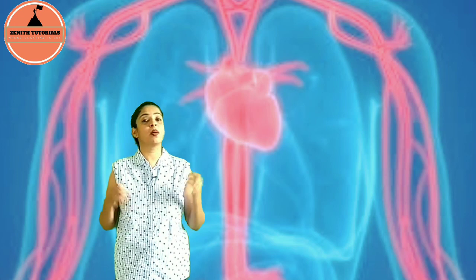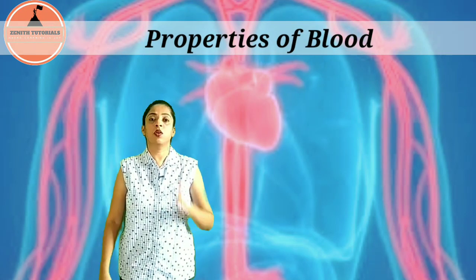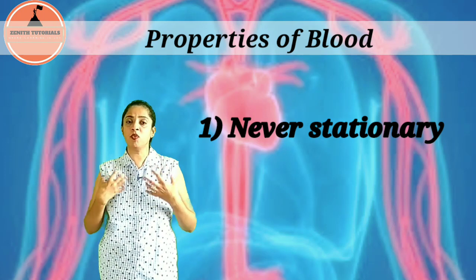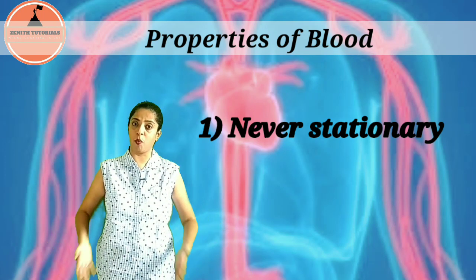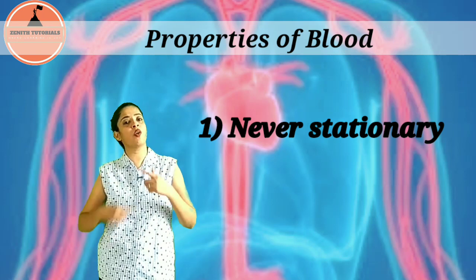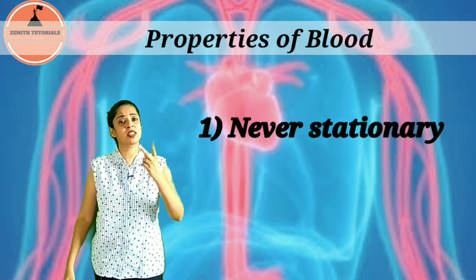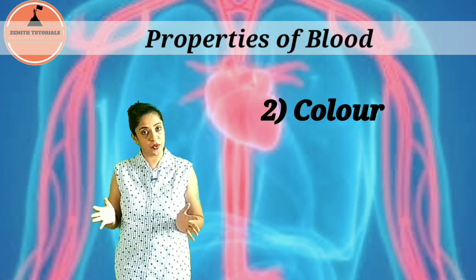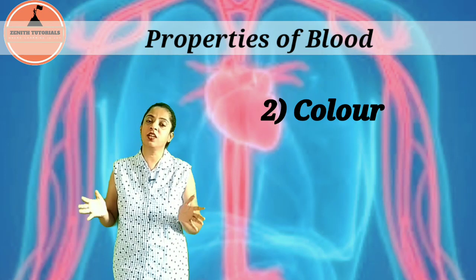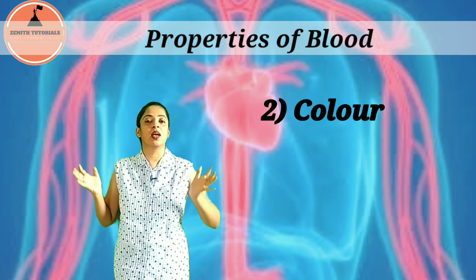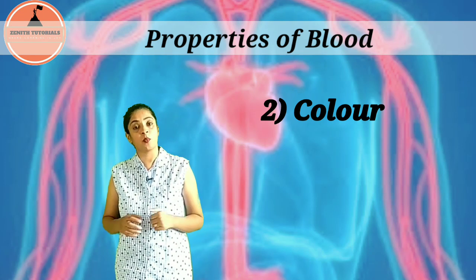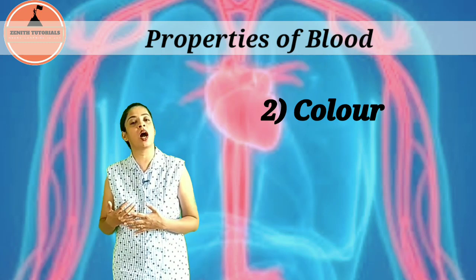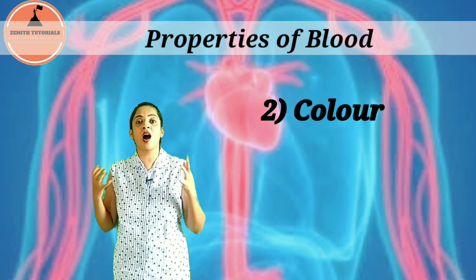Now our next topic is the properties of blood. The first property is that blood is never stationary — it keeps moving from the heart to body parts and back, so it is always in constant motion. The second property is its color. Blood is a thick fluid, and oxygen-rich blood is bright red in color, whereas deoxygenated blood — blood carrying carbon dioxide — is dark red in color.